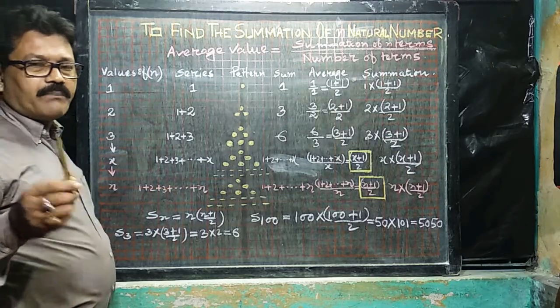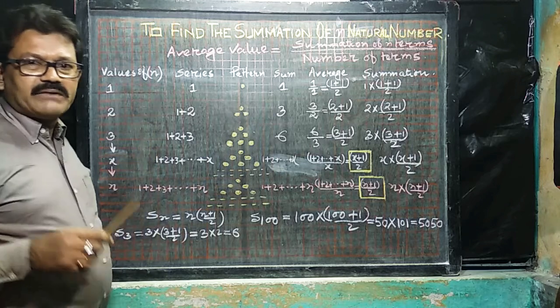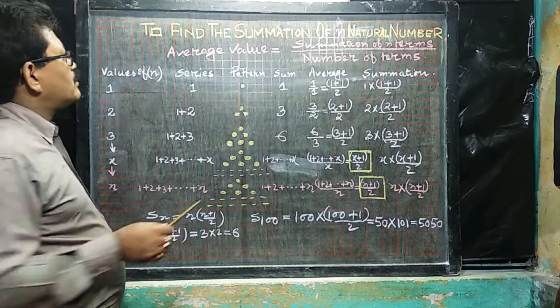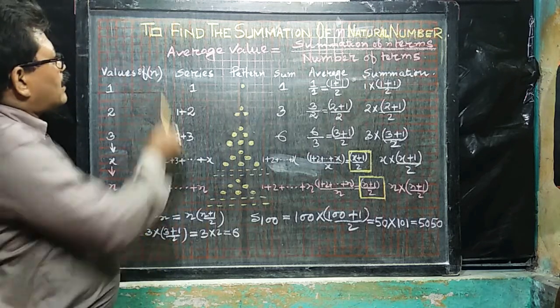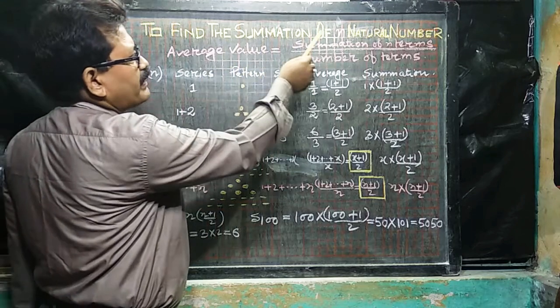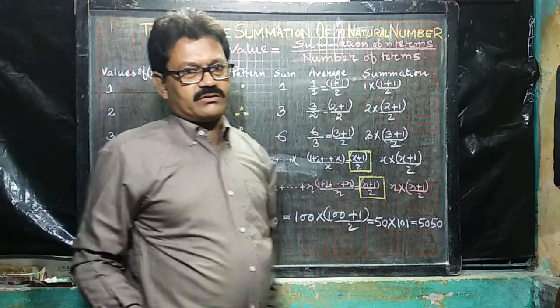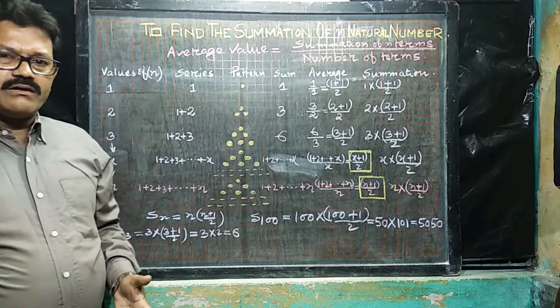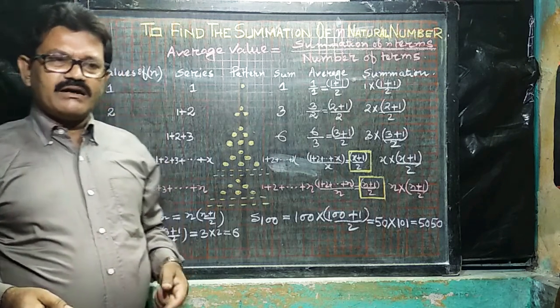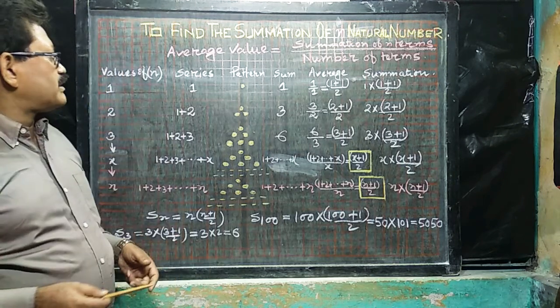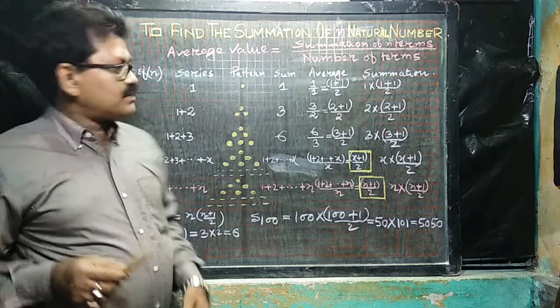Hi guys, on behalf of PNW, this is mathematical video series number 3. Today we will discuss how to find the summation of n natural numbers, say for 1 to 10, what will be the summation, and 1 to 100, what will be the summation. The main principle is here, the average value.